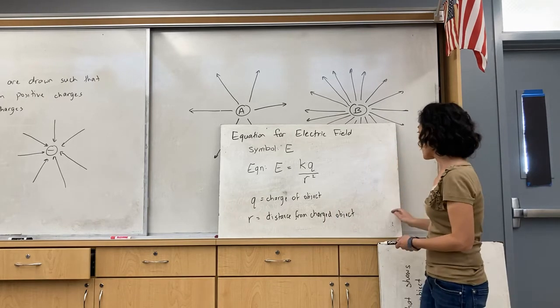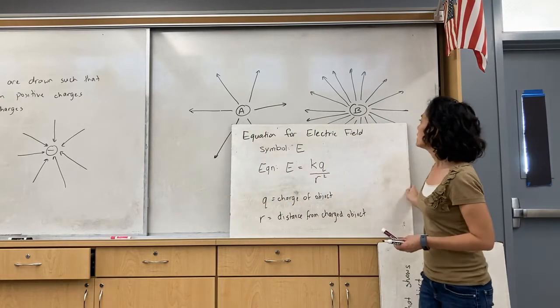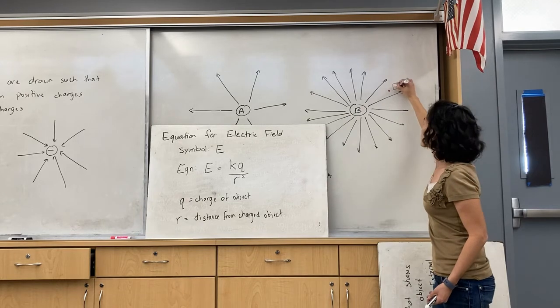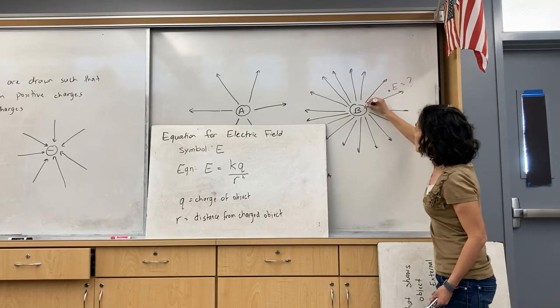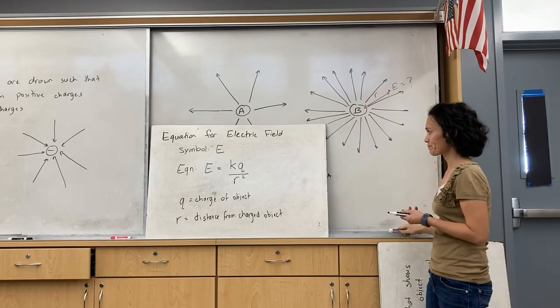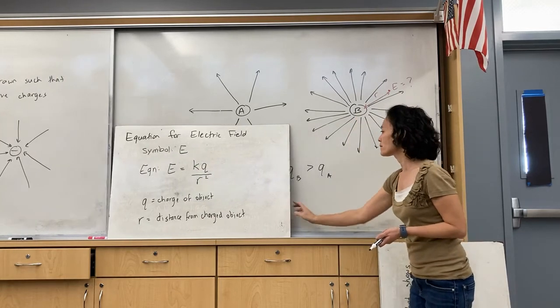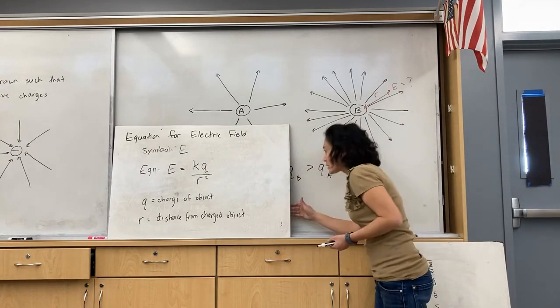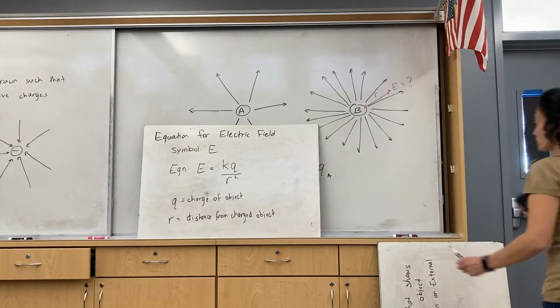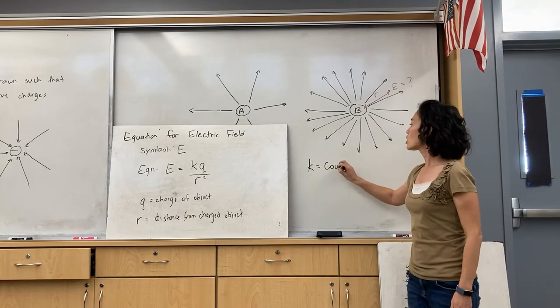So this is like if I had this charged object and I wanted to know at this point in space, what is the electric field right there? I would need to know what the Q value is and what the R value is, what the distance is. And then the last thing in the equation is this K. That K is called Coulomb's constant.